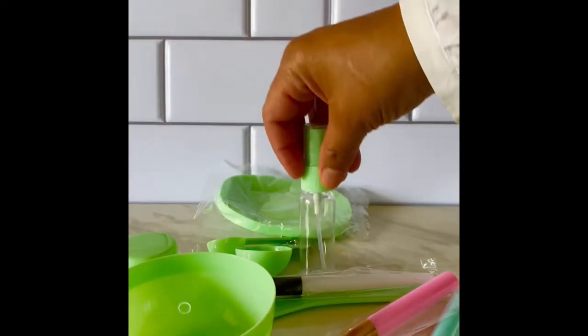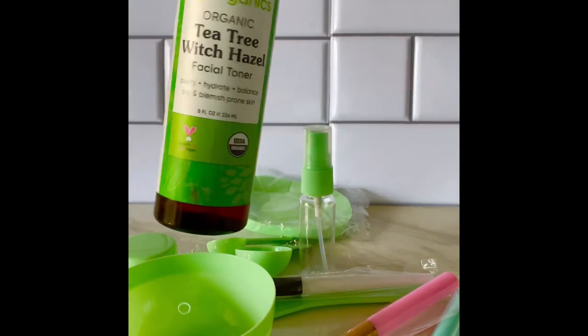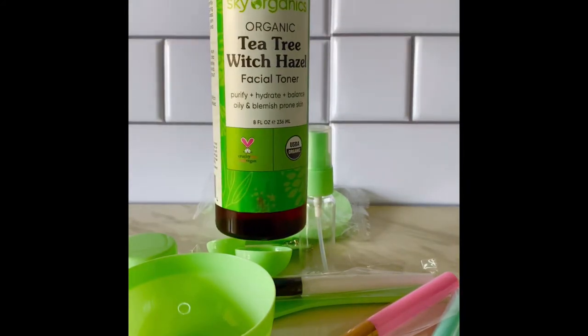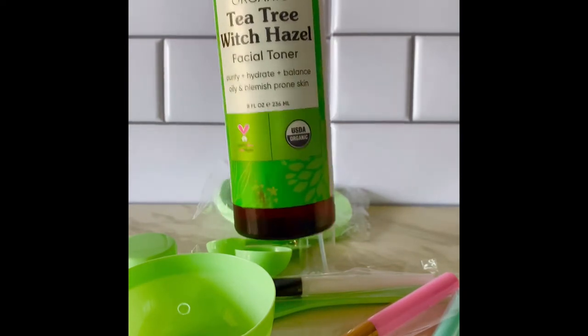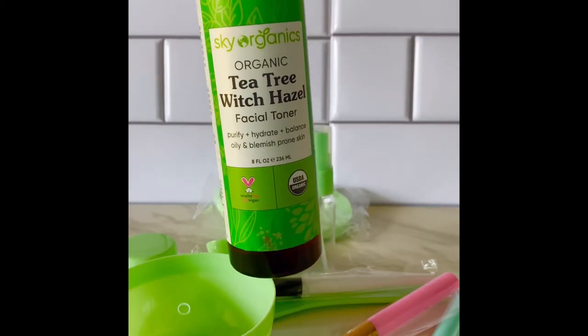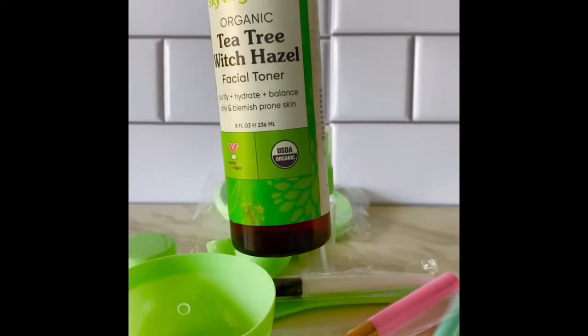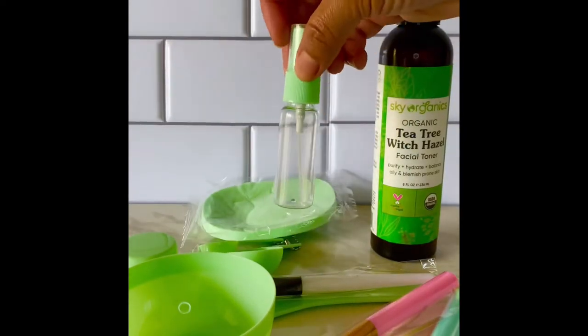So in the spray bottle, what I would like to add is the tea tree oil with witch hazel. I've gotten that from Amazon. It's almost done, I need another one, but it's the bomb. I love it. It makes my face feel nice. I use it right after the shower, so I plan on putting that in there.